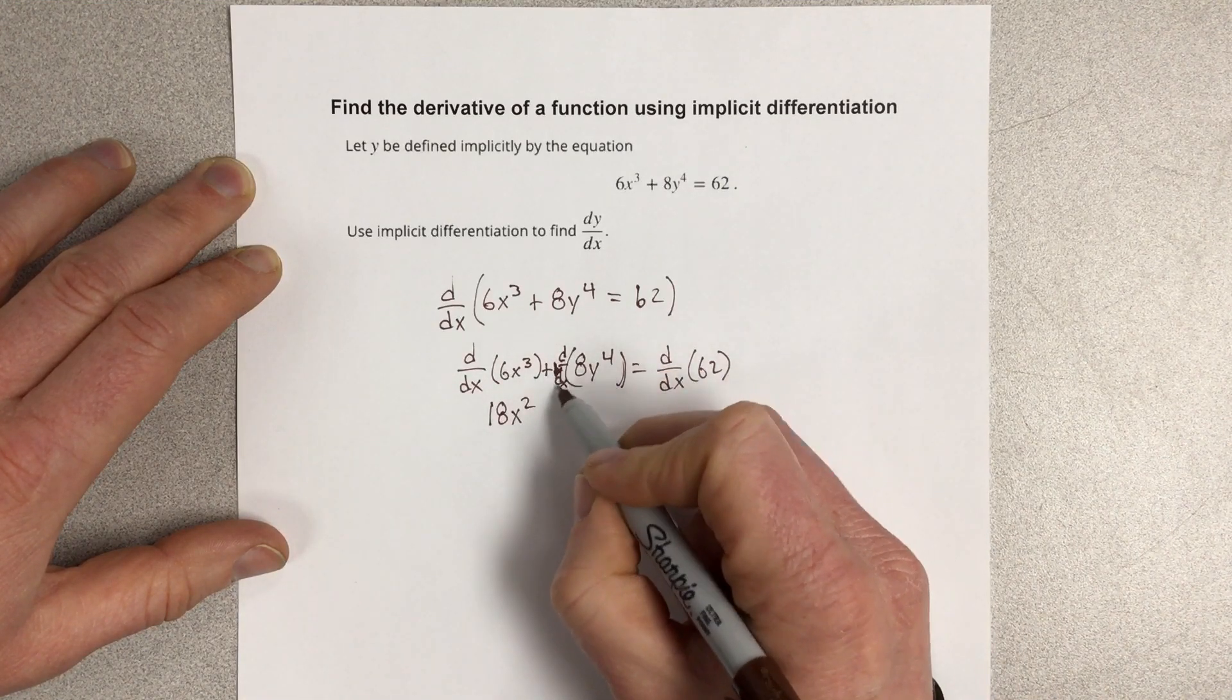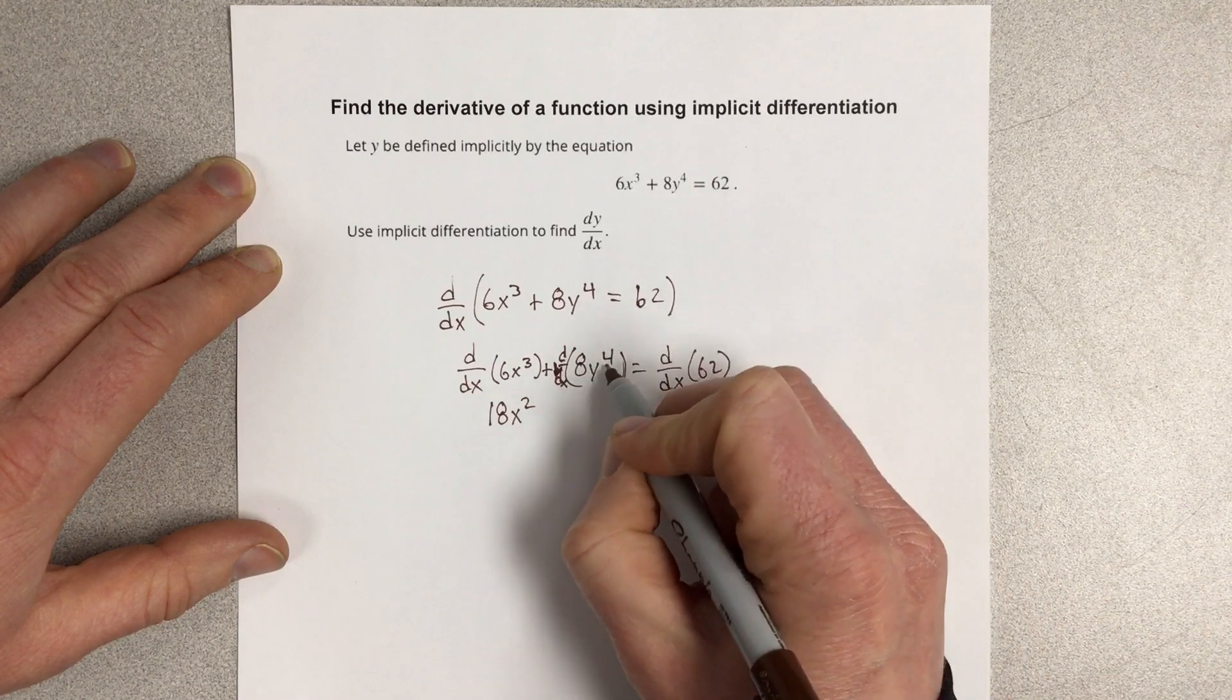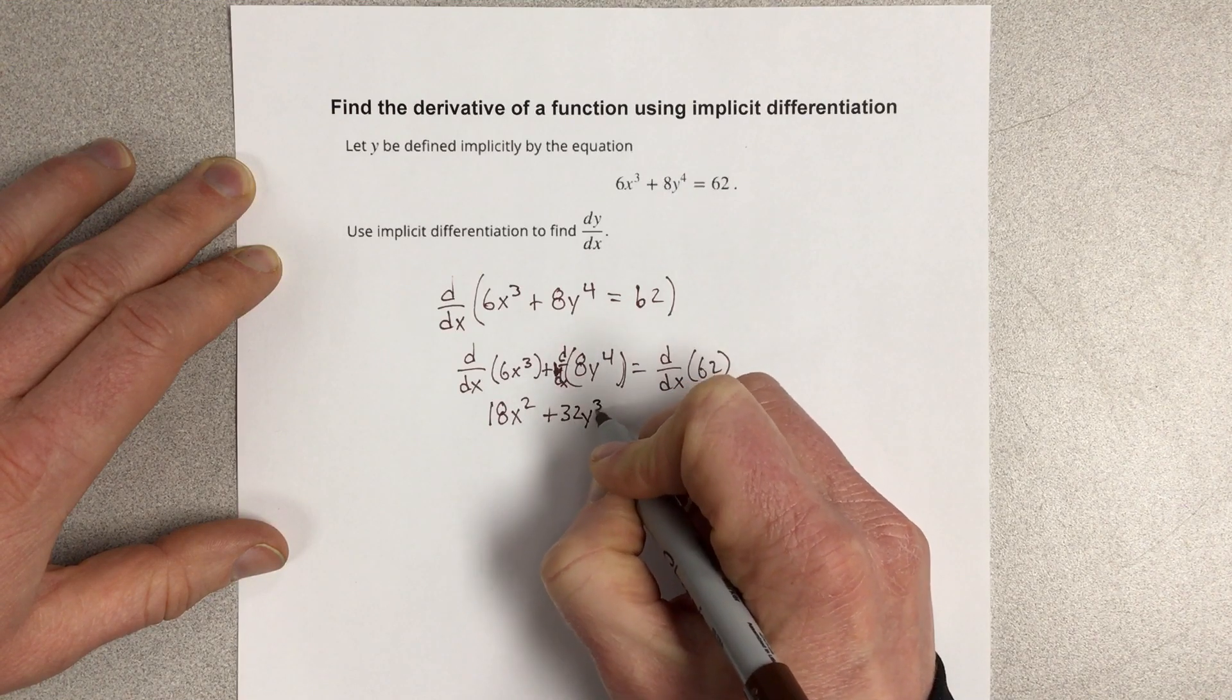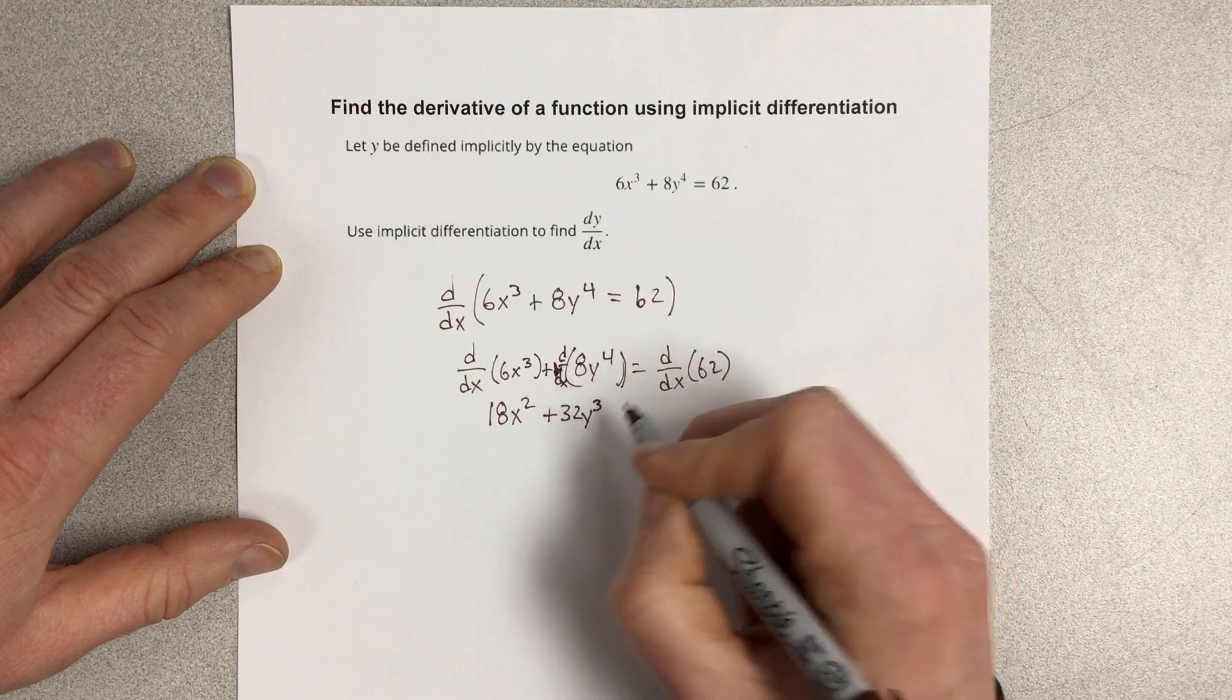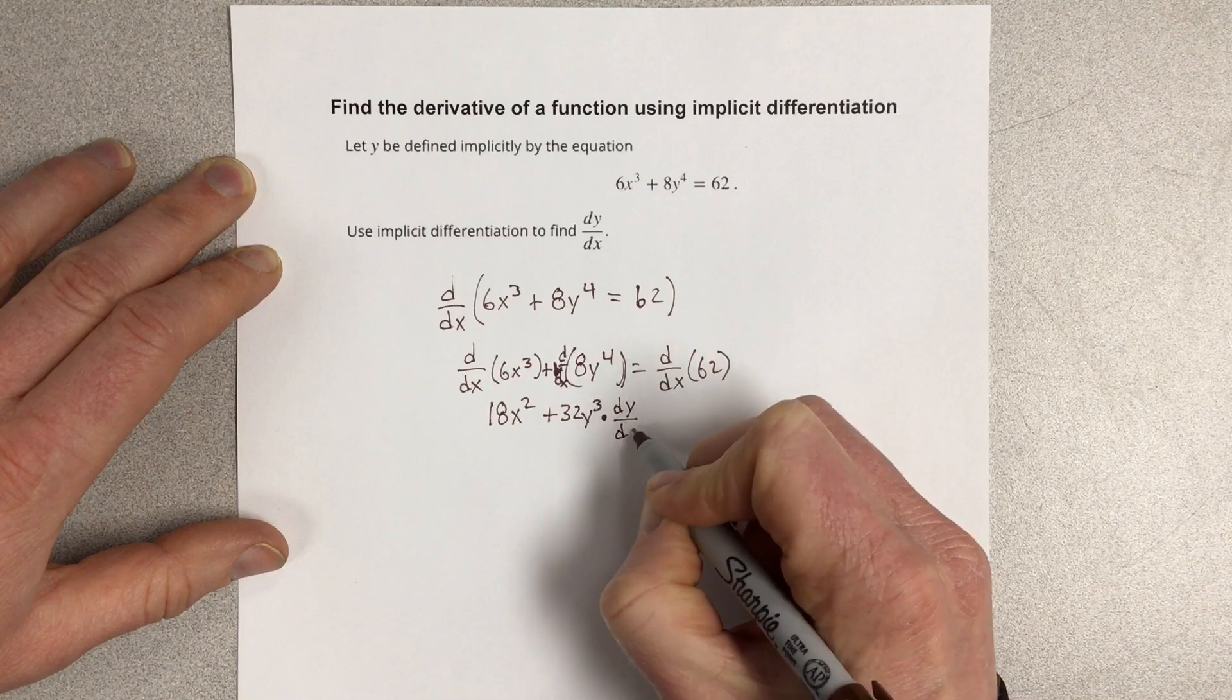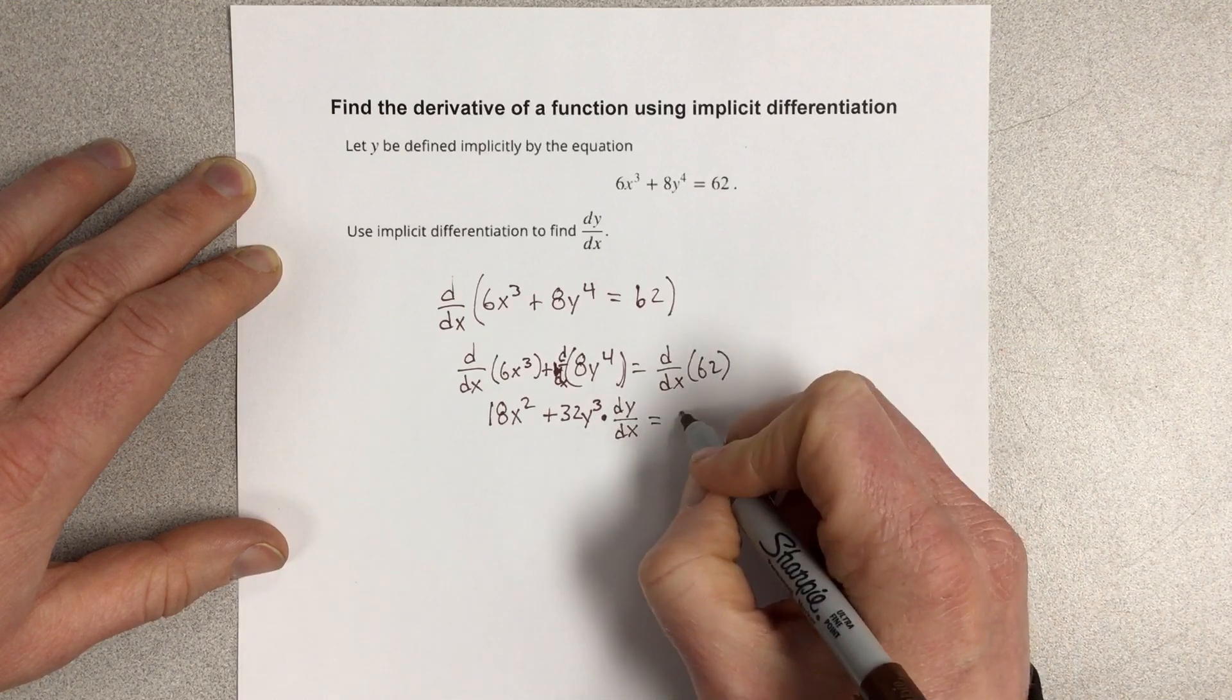But now, I'm taking the derivative with respect to x of this y variable. So I'm going to take the derivative the normal way by doing plus 32y³. But because I'm taking the derivative of y with respect to x, I need to multiply this by dy/dx. And then the derivative of 62 is 0.